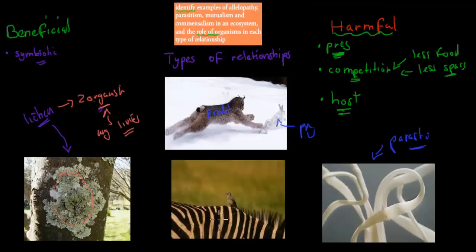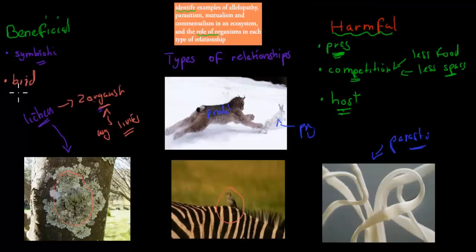We also have relationships like the bird eating off the zebra's back. The bird is benefiting — it has a beneficial relationship. Even if the zebra doesn't benefit from it, the zebra is generally not harmed. So not harmed, whereas the bird is benefiting.